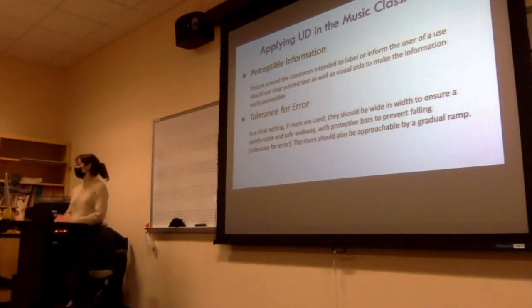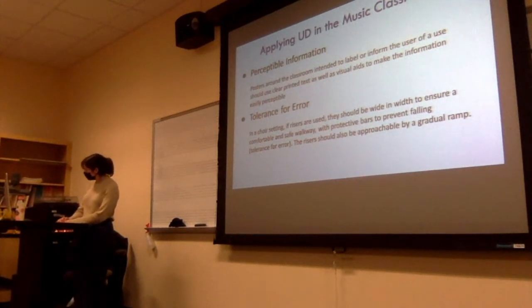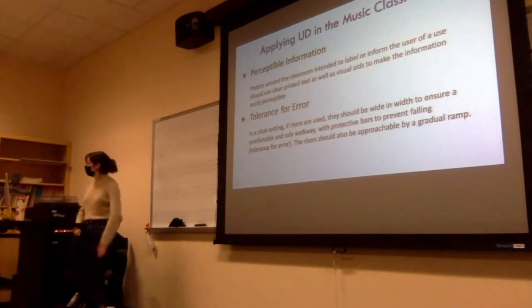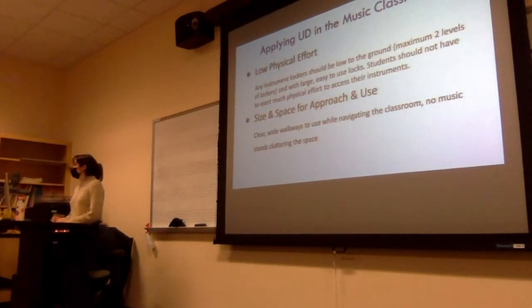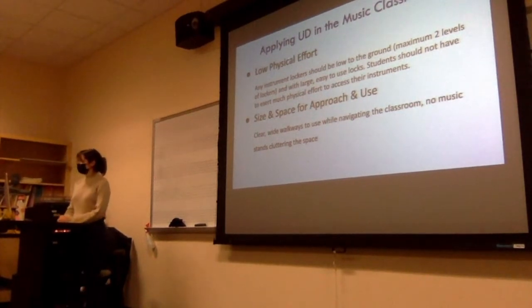Tolerance for error is a principle that mainly deals with safety. If somebody were to engage with the space incorrectly, does the environment have a safety net for that? For this one, I talked about in a choir setting, if you're using risers, they should be wide in width so a very easy walkway, and they should have protective bars that someone could grab onto, and also they should be approachable by a gradual ramp. Then we have low physical effort. Any instrument storage that's in your room should be low to the ground with large blocks that also come with instructions on how to use them. And then the last one is size and space for approach and use. I'm sure we can all picture our music classrooms cluttered with music stands and chairs and unpredictable walkways, and that's a big accessibility issue. So it's important not just for cleanliness but for consistency and ease of use that your classroom is set up in an accessible way.